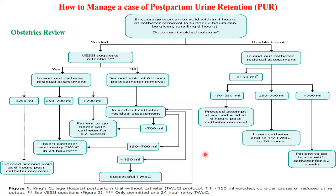To summarize management: the key fixed point is — if the amount is between 250 to 700 ml, keep the catheter for 24 hours and do a trial without catheter after 24 hours. If it is more than 700 ml, let the patient go home with the catheter for two weeks. After two weeks, if she still has a problem, ask the urologist to review her.